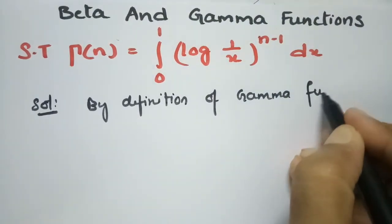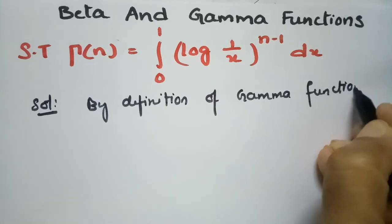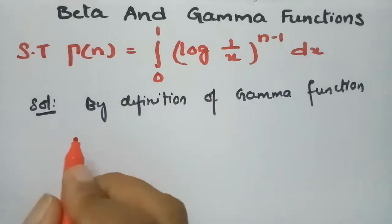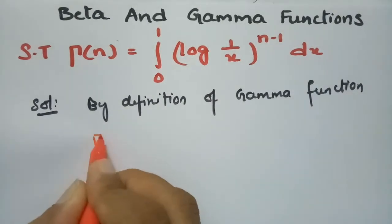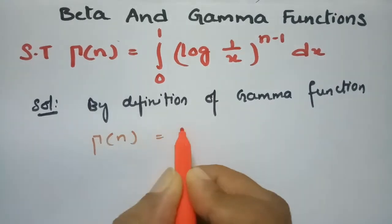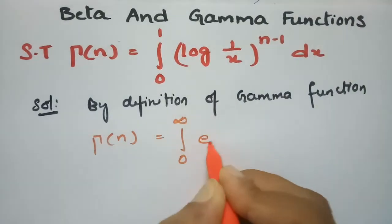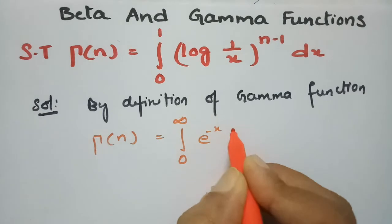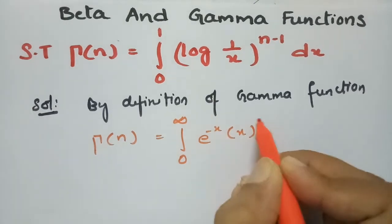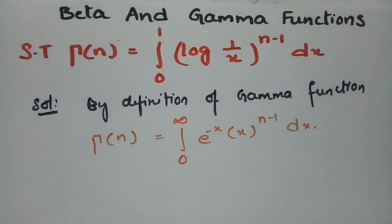By the definition of the gamma function, we have gamma n is equal to the integral from 0 to infinity of e to the power minus x, times x to the power n minus 1, into dx.